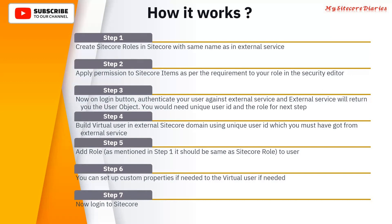This is a seven-step process. First, create Sitecore roles in Sitecore. Second, apply your permissions to your Sitecore items as per your requirement. Third, authenticate your user credentials and create the user object and unique ID from the external service. Fourth, build the virtual user in Sitecore using your external Sitecore domain. Fifth, assign the role created in step one to that user. Sixth, optionally customize any property. Seventh, programmatically log in that virtual user into Sitecore.